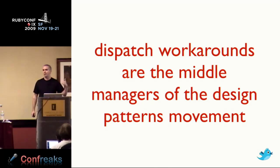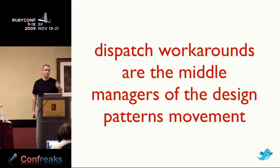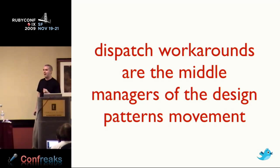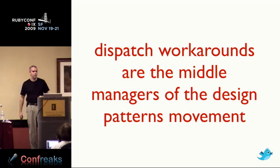Dispatch workarounds are the middle managers of the design patterns world. If you're building good old-fashioned noun-oriented programs, you end up with 17 classes to represent one domain object — the Person, PersonDAO, PersonDTO, PersonFactory. That happens in Ruby too. We solve that problem in a different place in Clojure — we solve it in a dispatch function. We solve that problem with a verb, not a noun. Problems you solve with nouns, you're now going to solve with verbs.